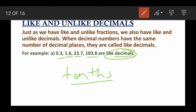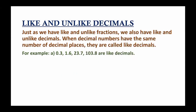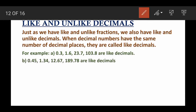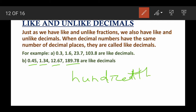Here is another example: 0.45, 1.34, 12.67, and 189.78. In all these cases the decimal places are the same — each contains two digits after the decimal point. The first digit is the tenths place and the second digit is the hundredths place. So you can say that all these contain the same number of decimal places and are like decimals.